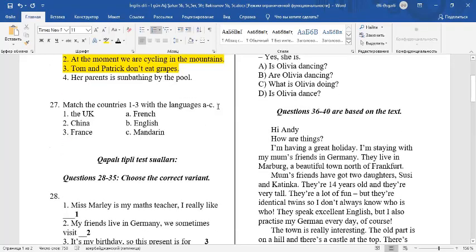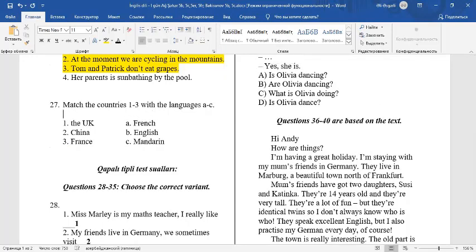27. Match the countries 1, 2, 3 with the languages A to C. 1. The UK. In the UK, people speak English. 2. China. In China, people speak Mandarin. 3. France. In France, people speak French. 1B, 2C, 3A.